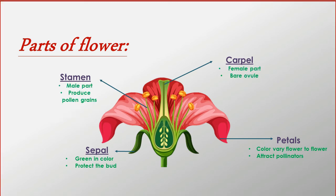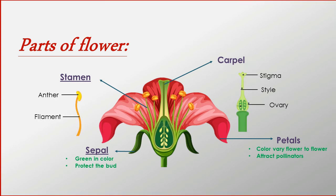The female part of the flower is known as the carpel. It bears an ovary within which ovules are present. Carpel consists of three parts: stigma, style, and ovary.